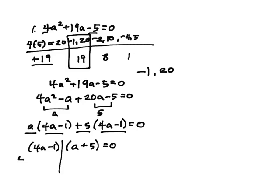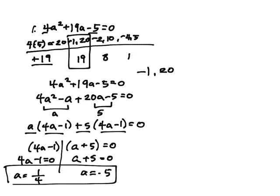And then I can split it. So 4a minus 1 equals 0, and a plus 5 equals 0. So a equals negative 5, and a equals 1 fourth. And that's my final answer.